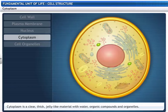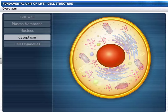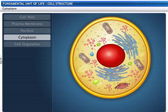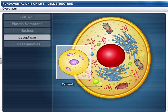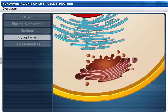Cytoplasm is a clear, thick, jelly-like material with water, organic compounds, and organelles. The liquid part of the cytoplasm, other than the organelles, is called cytosol. Cytoplasm supports and protects the cell organelles that perform different metabolic functions.